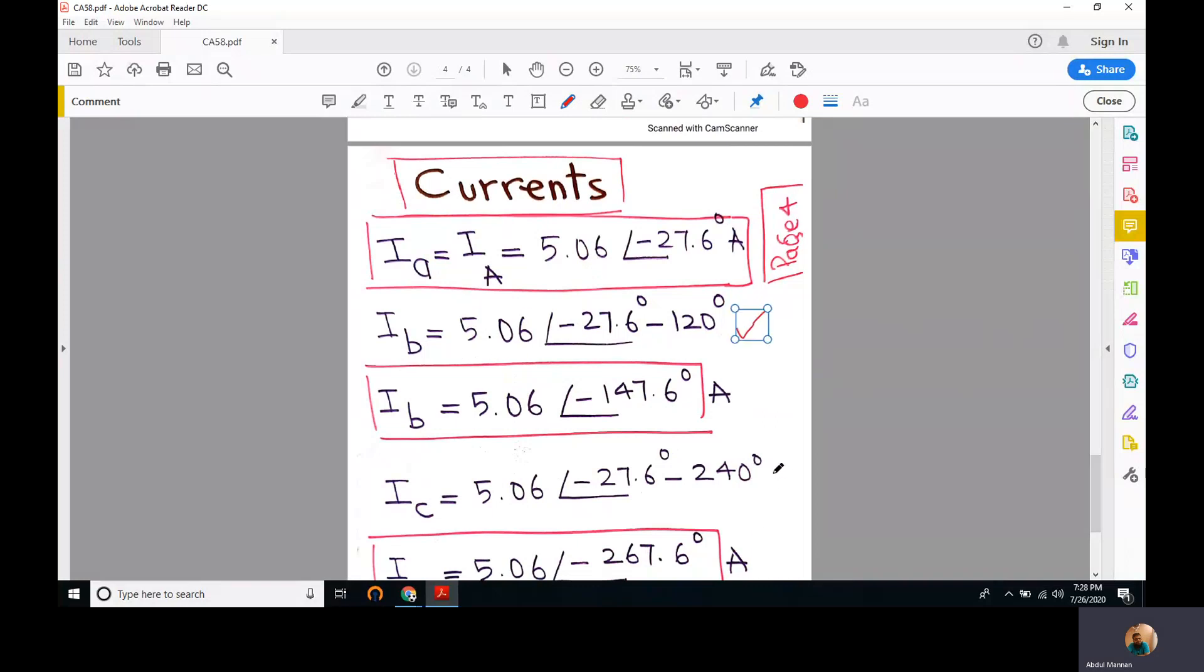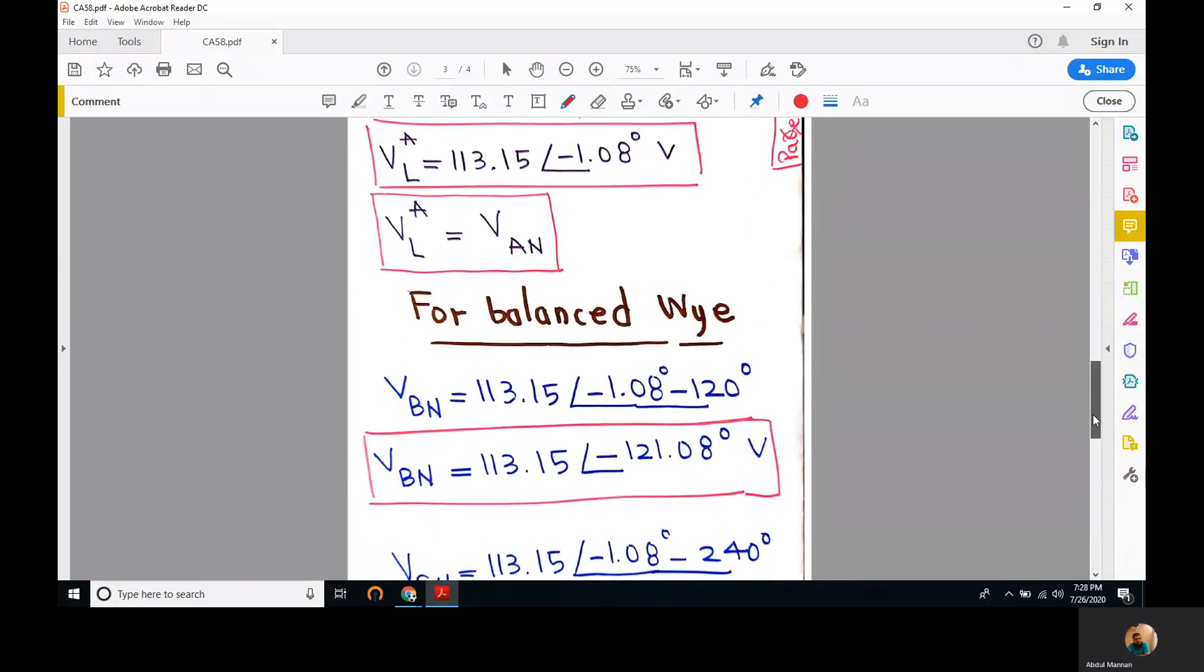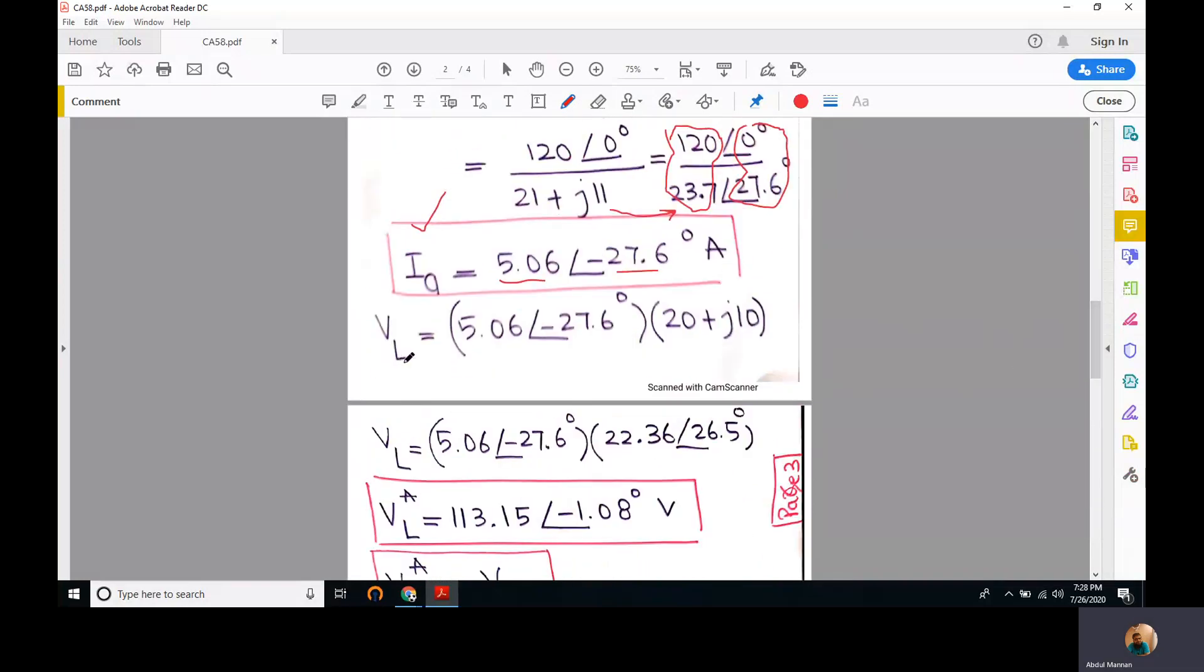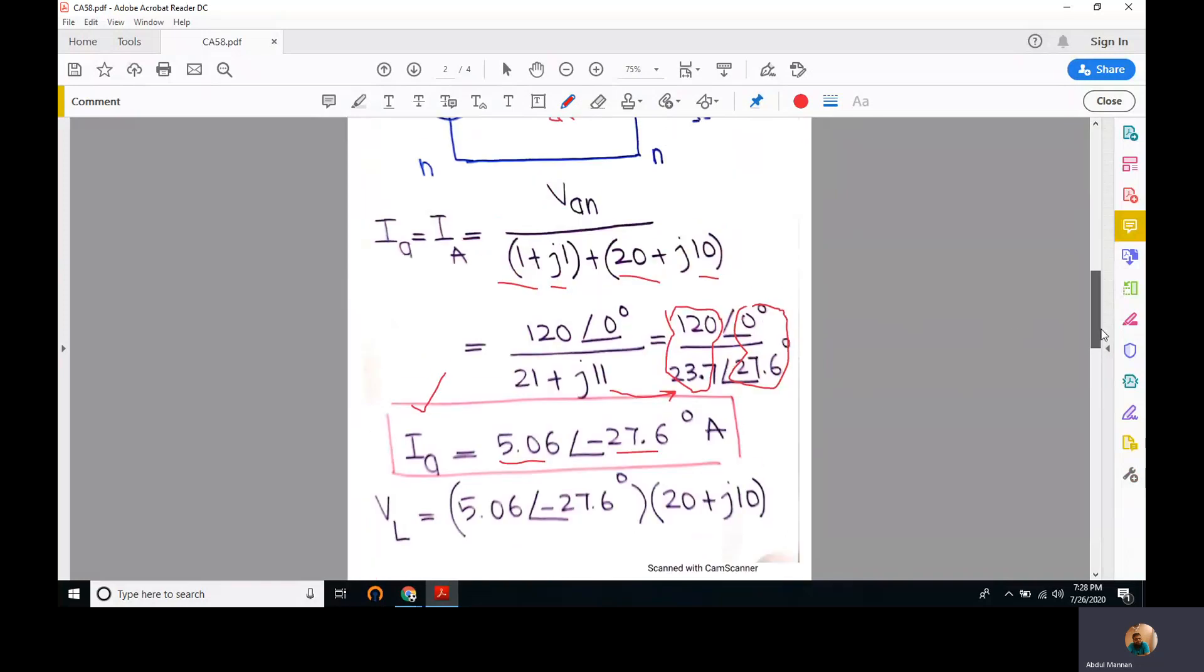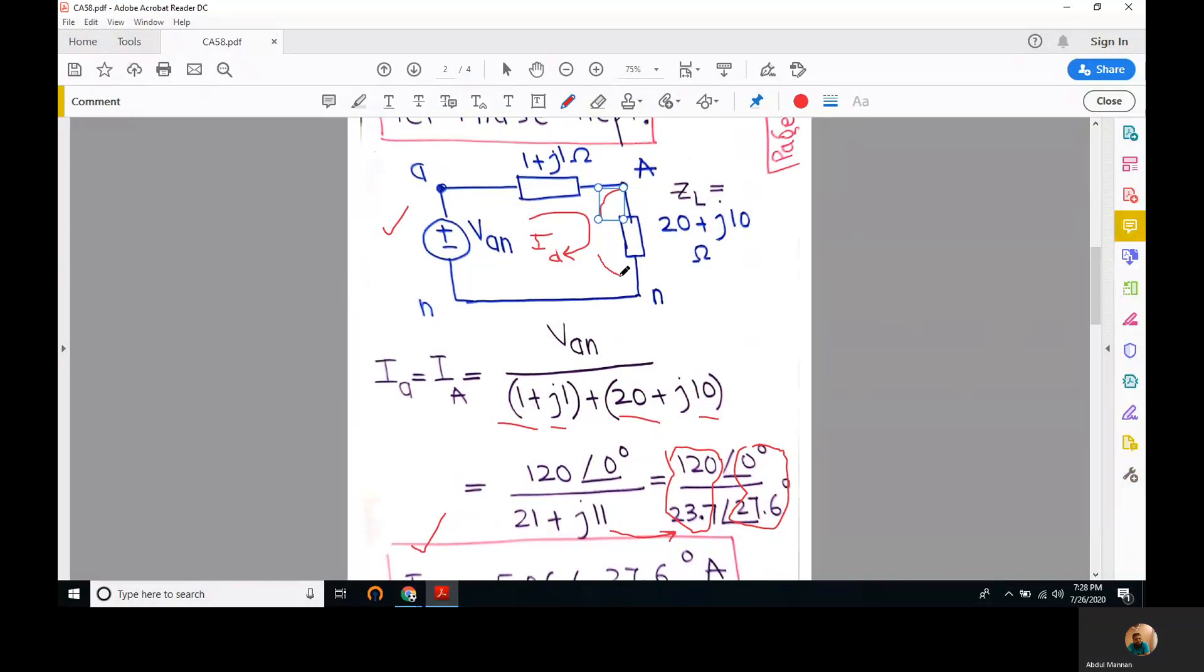The next thing is we have to compute the load voltage Vl, or we can also call this voltage Van, the voltage from this capital A terminal to the common terminal n. To differentiate the small a with this capital A, small a is on the source side whereas capital A is on the load side. V capital A n is the voltage across load in phase A.